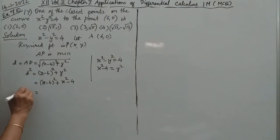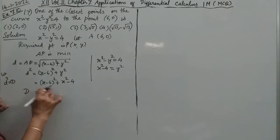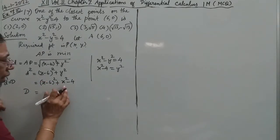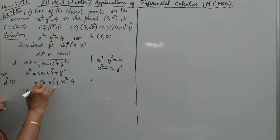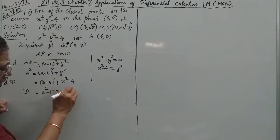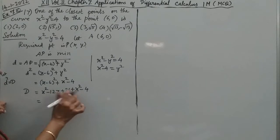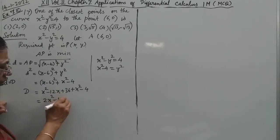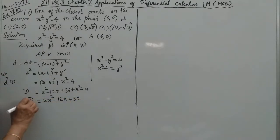Expanding this, D squared becomes 2x squared minus 12x plus 40. So we have D squared equals 2x squared minus 12x plus 40.